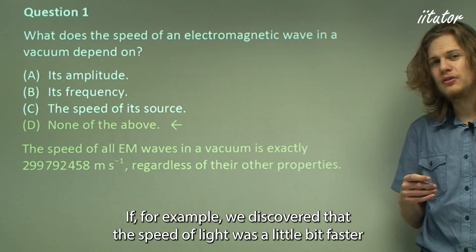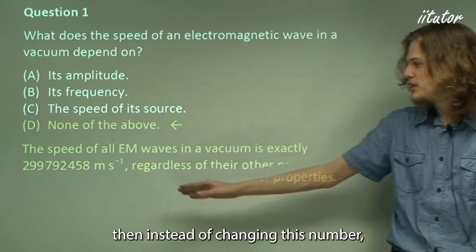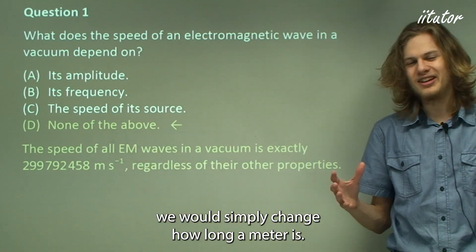If, for example, we discovered that the speed of light was a little bit faster or a little bit slower than we thought it was, then instead of changing this number, we would simply change how long a meter is.